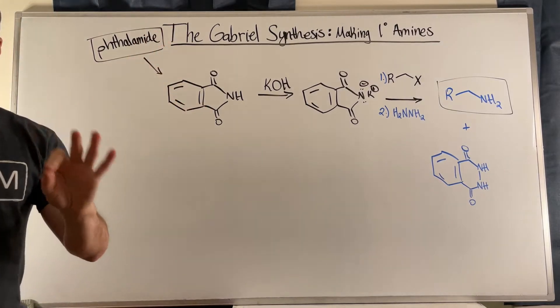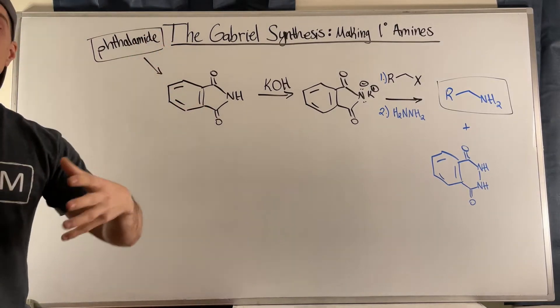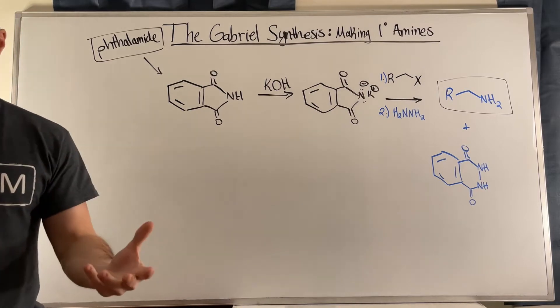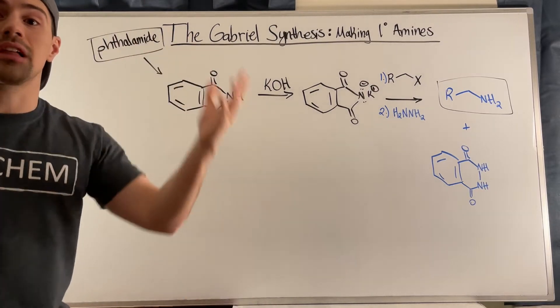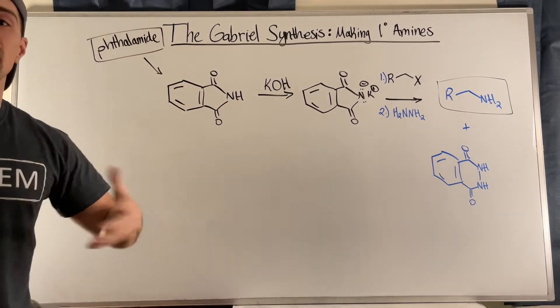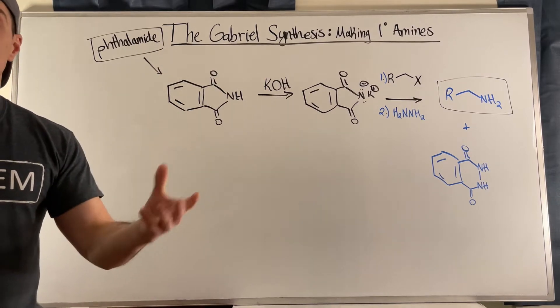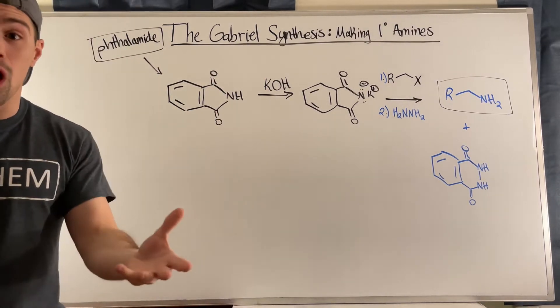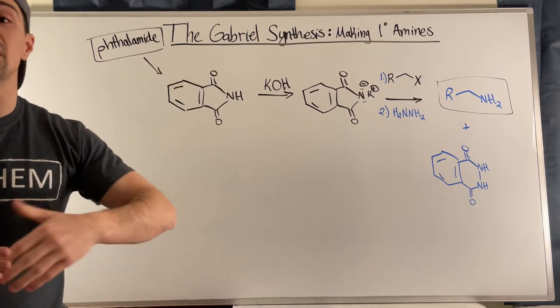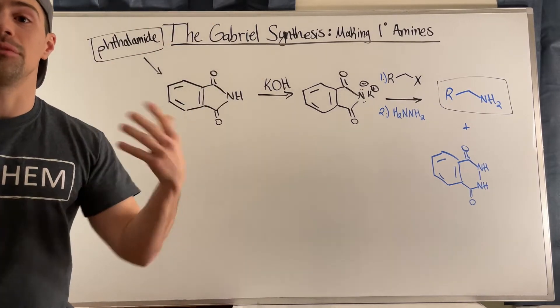Now, thalamine, super helpful reagent. It's very widely available and inexpensive to purchase, right? So in real life, this is a very practical way of producing primary amines and circumventing that problem we saw with overalkylation, with exhaustive alkylation of amines, right?